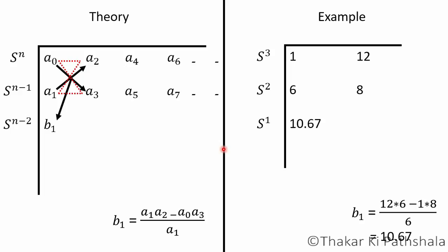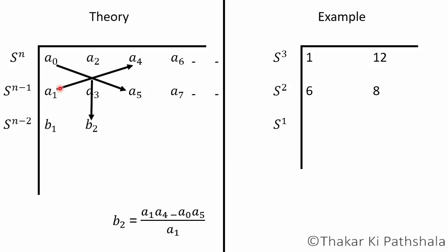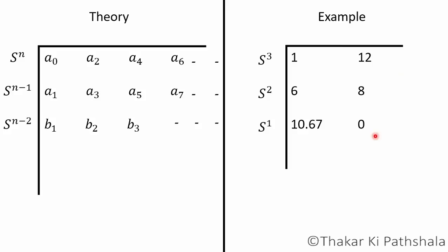Now to get the value of b₂ we will do the same thing. Start from a₁, and multiplication of a₁ with a₄ minus multiplication of a₀ and a₅. If we look into the example then here we don't have any quantities, so we are taking 0. For b₃ we will do the same thing, just move to one quantity. So the value of b₃ will be multiplication of a₁ and a₆ minus multiplication of a₀ and a₇ divided by a₁. Here you need to pay attention that we are fixing these two quantities and varying the other two. Now look here, we will get one less quantity than the previous row. It will happen all the time. If we write this for the next row then we will get only two quantities.